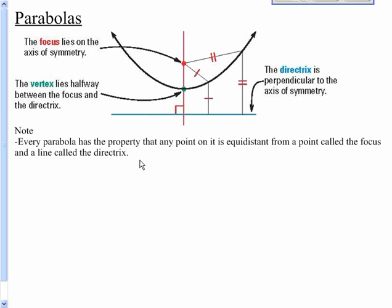Let's look at some characteristics of parabolas. Here's a little vocabulary: the focus lies on the axis of symmetry. Every point on this parabola is the exact same distance back to the focus as it is to what's called the directrix. This directrix is the blue line here, and it's perpendicular to your axis of symmetry.